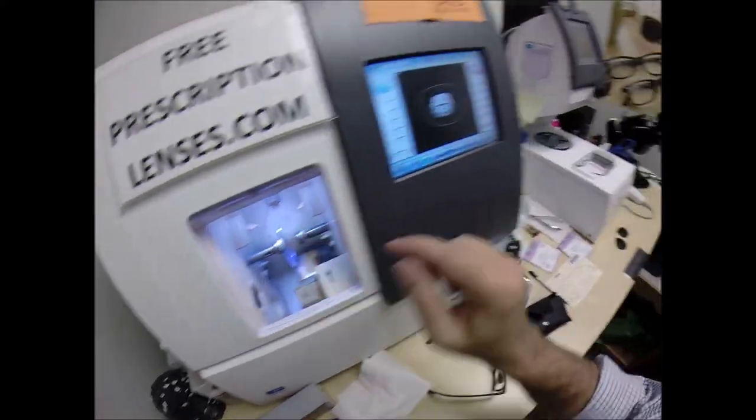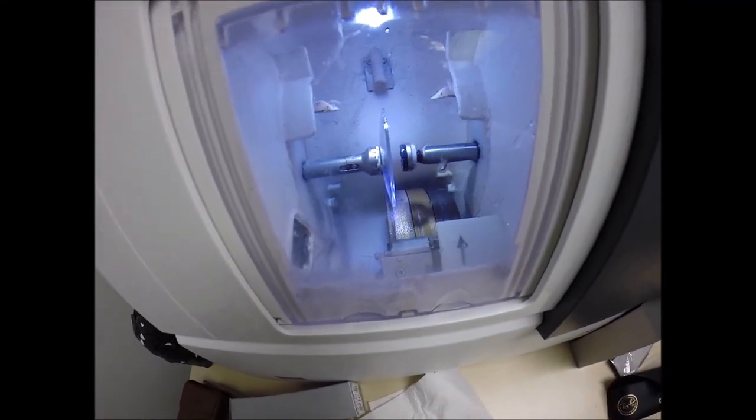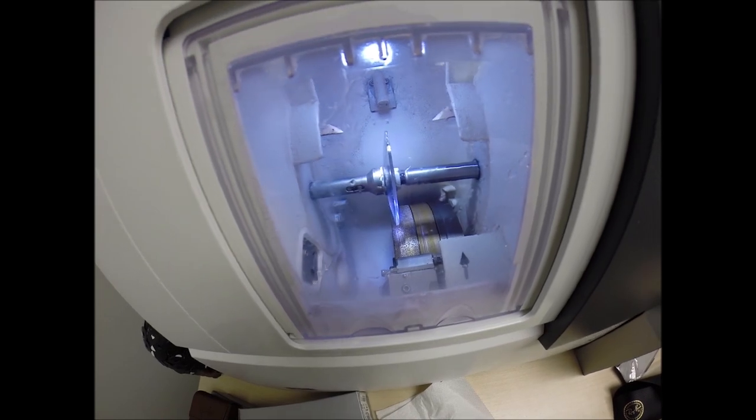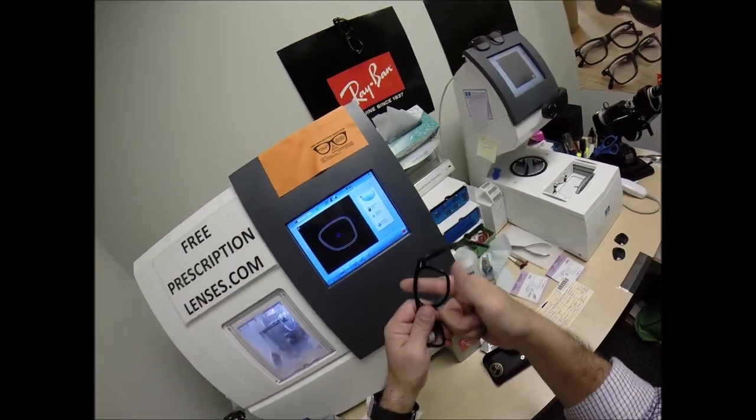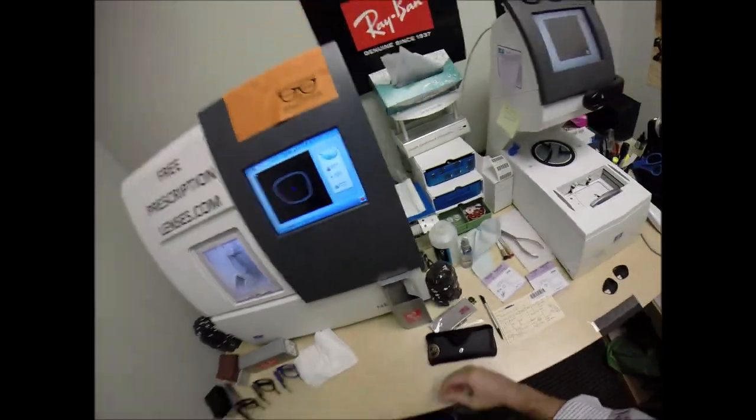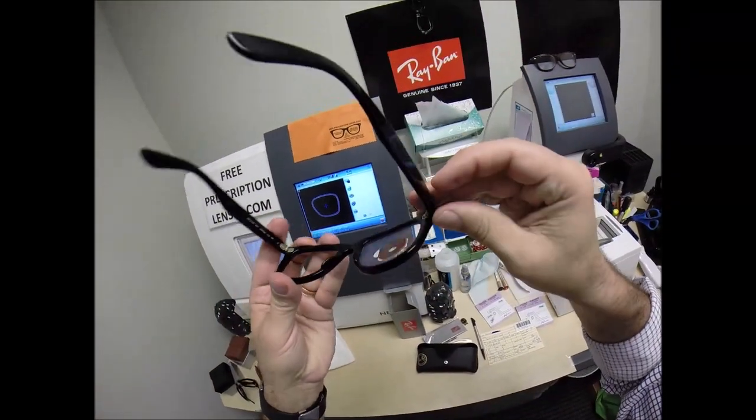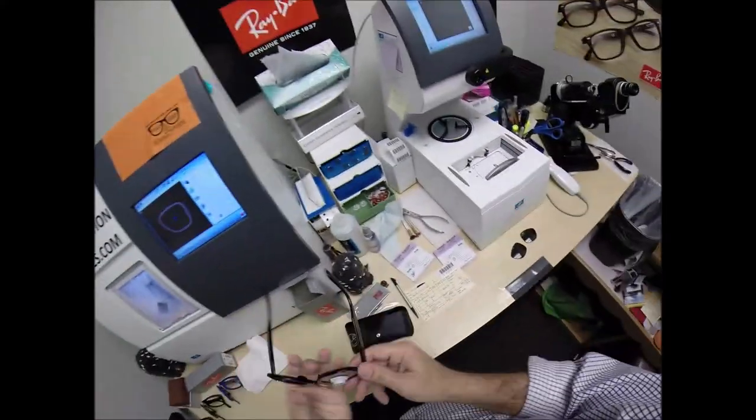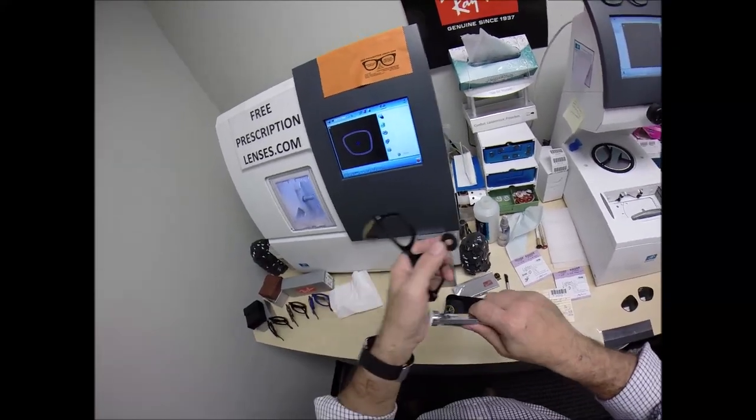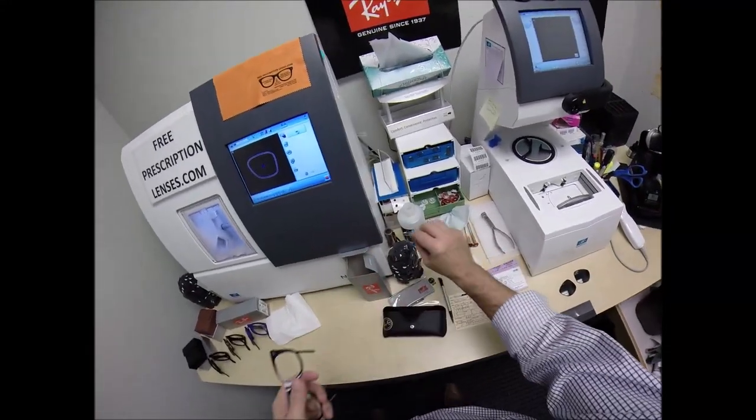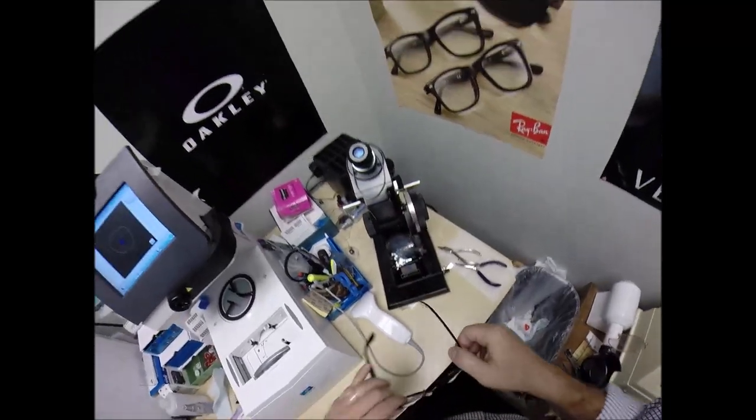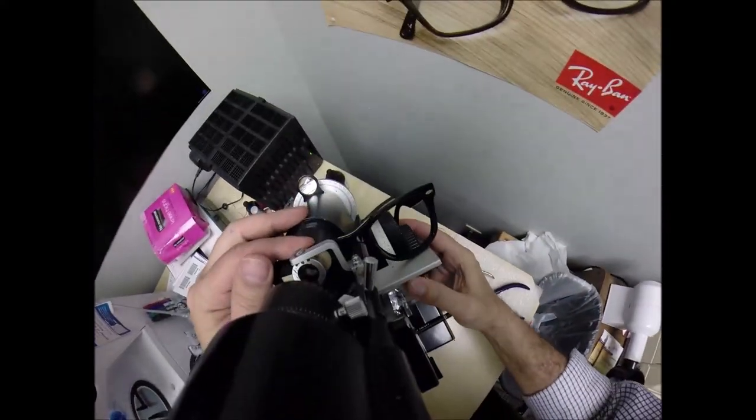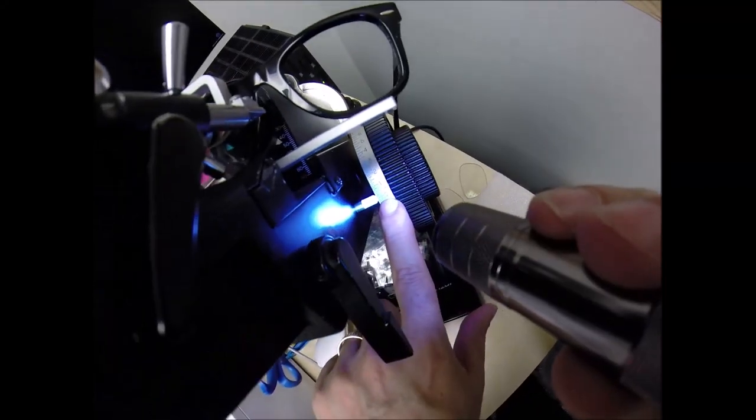We're going to do .30 on this side. Hit the green start button. Just like before, the door closes, the clamp shuts, and the lens is going to be traced by the two white styluses. That old carpenter saying measure twice, cut once. Take the block off, put the sticker on top. If these were prescription, I would come down here and read the power. I'm getting zero, no prescription.